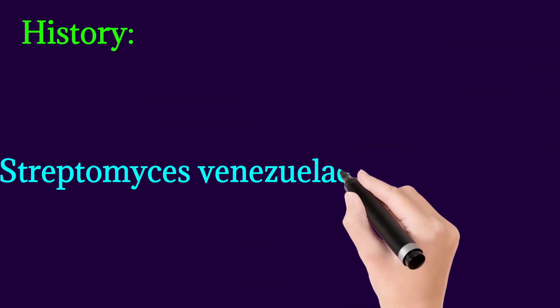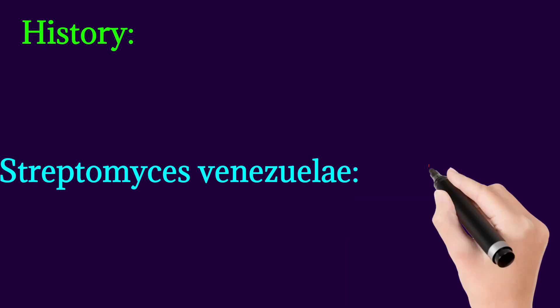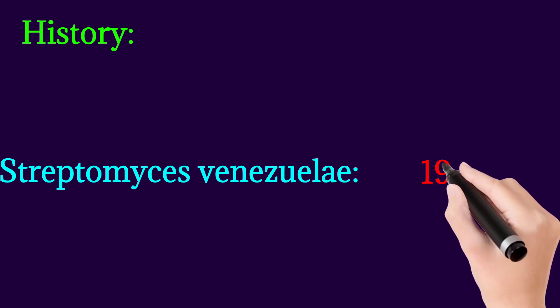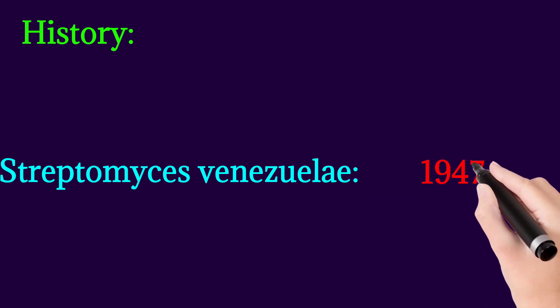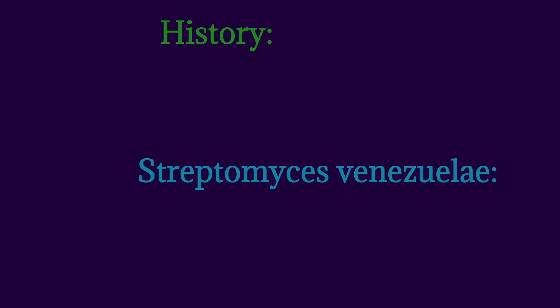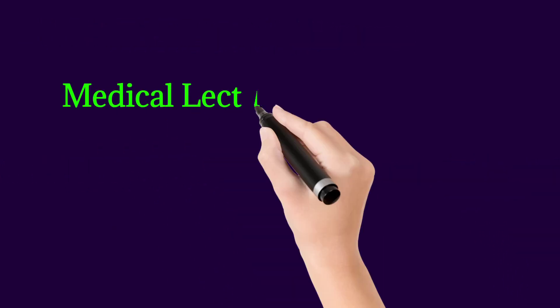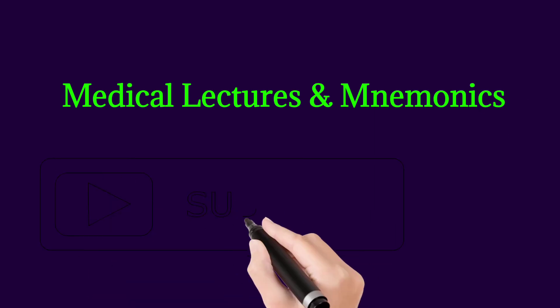History: Chloramphenicol was first obtained from Streptomyces venezuelae in 1947. This was all about Chloramphenicol. For more videos, please subscribe, like, and share. Thanks for watching.